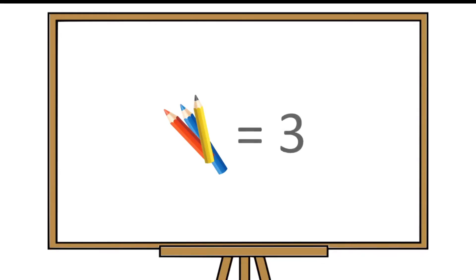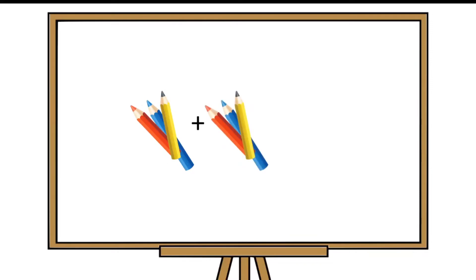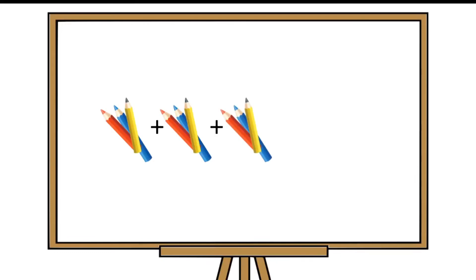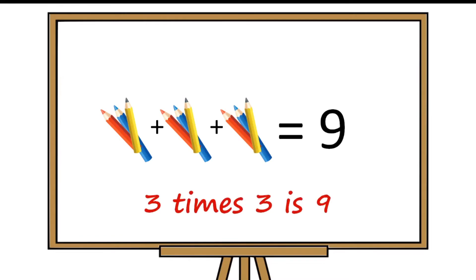What do you see on screen? Yes, these are three pencils. It means a group of three pencils. One times three is equal to three. Two groups of three pencils each is equal to six. It means two times three is six. Three groups of three pencils is equal to nine. It means three times three is equal to nine.